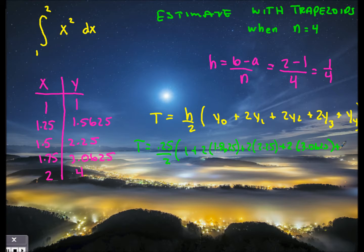And then plus y4, which is base 2 of the final trapezoid, the value of 4. From this point, it's just order of operations to calculate T, which is 2.34375.